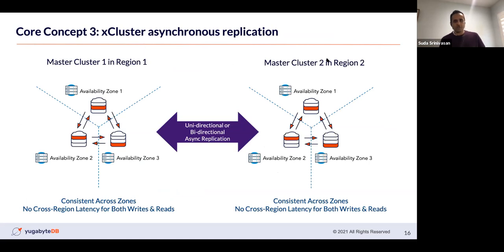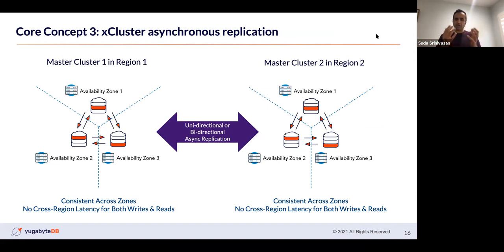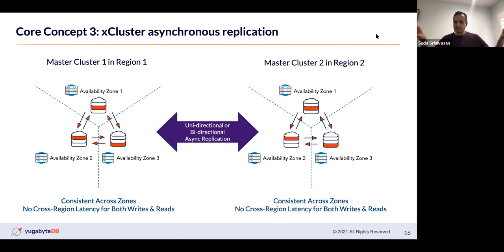The third concept is cross-cluster or X-cluster asynchronous replication. This capability in YugaByte DB allows two YugaByte DB clusters separated by completely different regions to replicate data either in one direction or bi-directionally. Data in one cluster is replicated to another asynchronously. Within each cluster, data is consistent and replication is synchronous, but across clusters it is asynchronous — not in the write path. This means clusters can be far apart. It's a great deployment mode for backup and disaster recovery, and for customers who want the ability to fail over to another cluster if there's a failure in one.